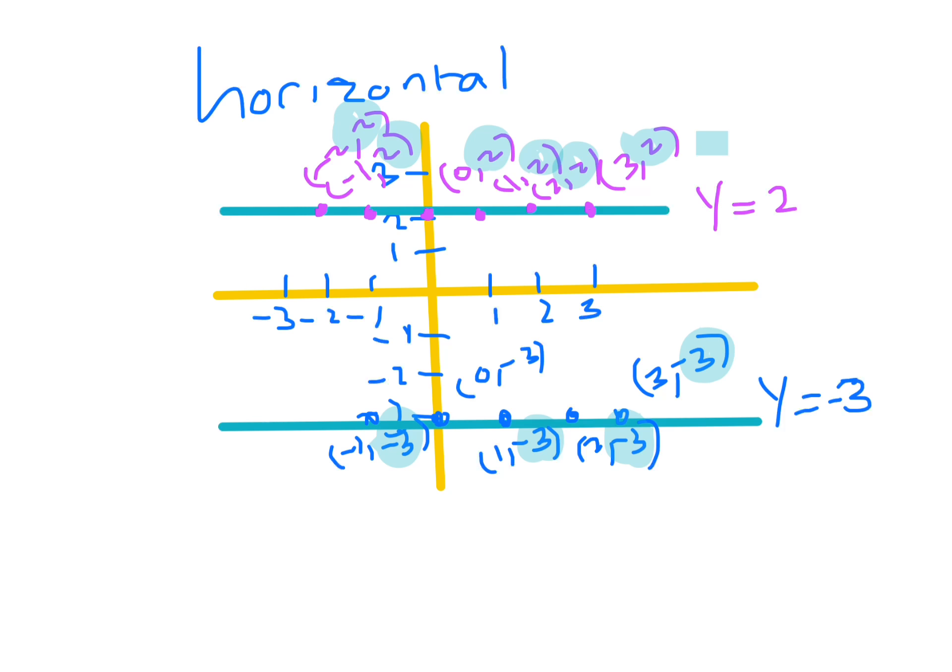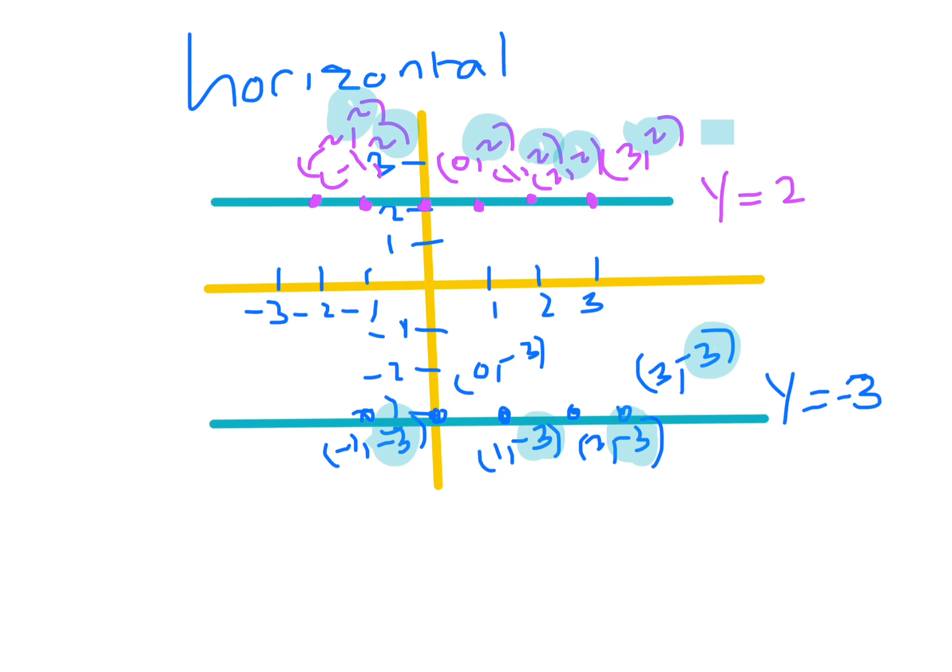Okay, so basically any line that is horizontal, wouldn't matter where you drew it, as long as wherever it cuts the y axis, like that one cut at minus one, the equation of that line would be y equals minus one.